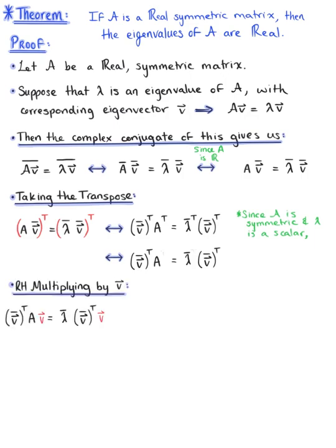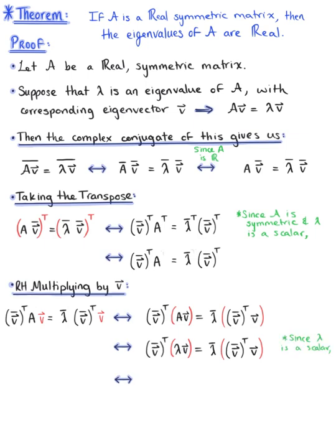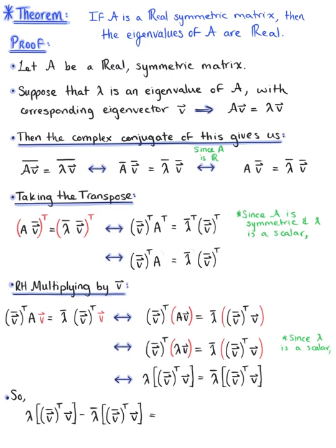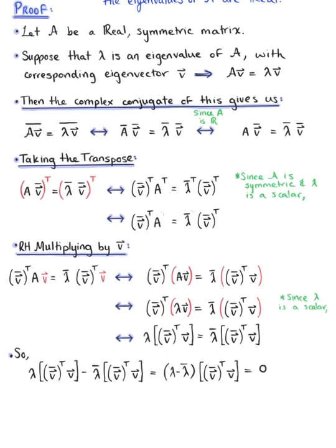Right-hand multiplying this equation by vector v, we can reorder terms on both sides. On the left-hand side we can replace A times v with lambda times v. Since lambda is a scalar, we can pull it out, leaving us with lambda times v-bar-transpose times v equal to lambda-bar times v-bar-transpose times v. Bringing all terms to the left-hand side and factoring, we're left with (lambda minus lambda-bar) times v-bar-transpose times v equal to zero.